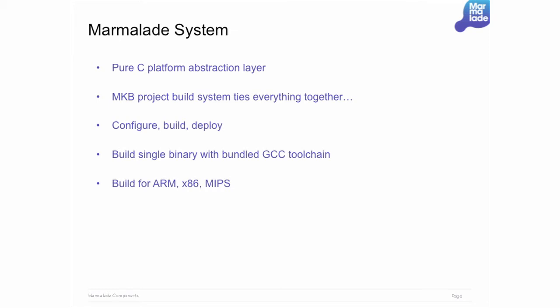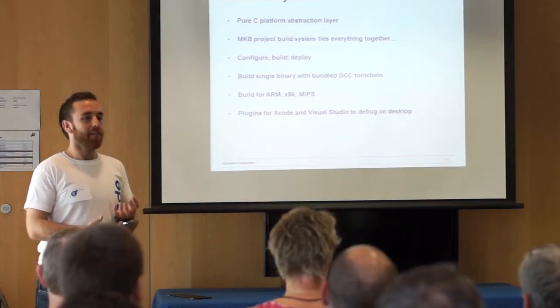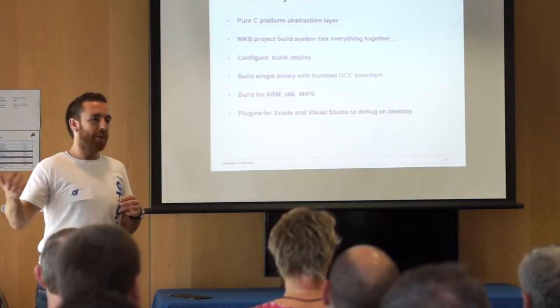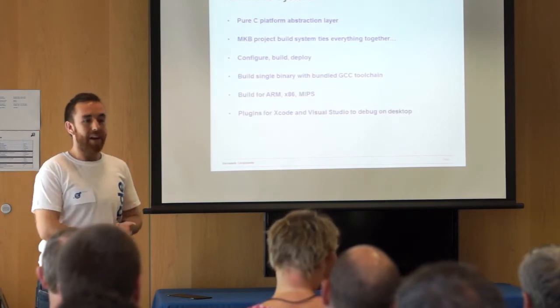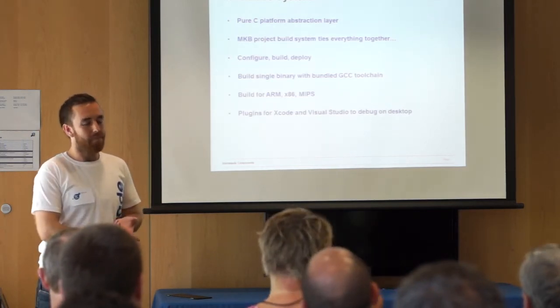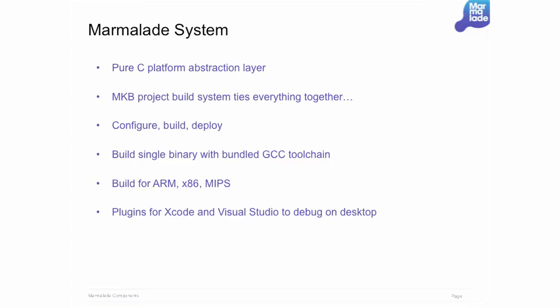We support ARM, x86 and MIPS on a few platforms now, with plugins for Visual Studio and Xcode. The important thing is you're not building an Xcode or Visual Studio project — you're using our MKB project system to build a Marmalade project, build a single binary, and then we let you plug into things like the IDEs or the debugger simulator on desktop to leverage those tools. But basically what you're building is this single binary at the end.